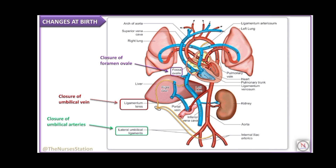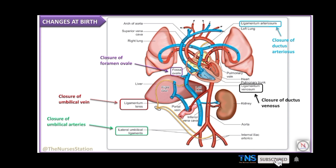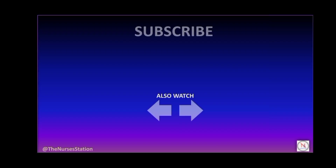Closure of the foramen ovale leaves an oval-shaped mark on the interatrial septum called the fossa ovalis. Closure of the ductus arteriosus results in formation of the ligamentum arteriosum; functional closure occurs soon after establishment of pulmonary respiration, and anatomical closure occurs by one to three months due to fibrous tissue growth. Finally, closure of the ductus venosus occurs in about three to seven days, and it eventually becomes the ligamentum venosum.